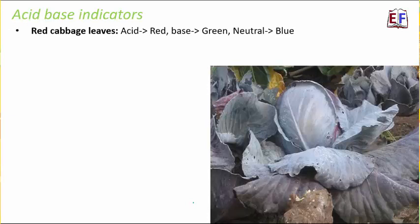Another popular acid-base indicator is red cabbage leaves. Have you ever seen red cabbage? Normally the cabbage is green in color, but if you go to a supermarket, you would see this red-colored cabbage. Their leaves also act as indicators — they turn red in acidic solution, green in basic solution, and blue if the solution is neutral. These are certain things you need to know: what would be the color if the particular substance is acid, base, or neutral.